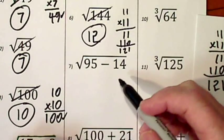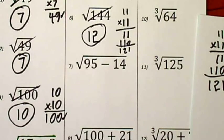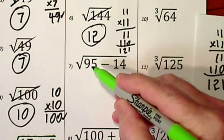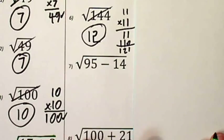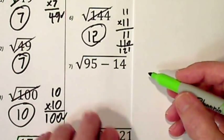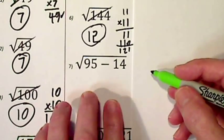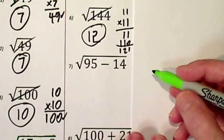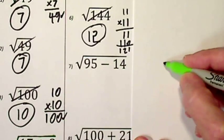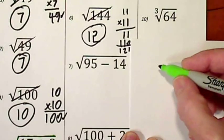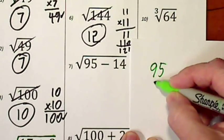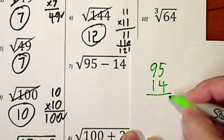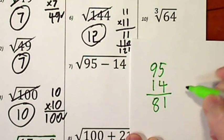Looking at our next case, remember the radical sign is a grouping symbol. So first we'll handle 95 subtract 14, and usually I'll do my scratch work off to the side rather than underneath, because I want to put the result underneath. So off to the side.